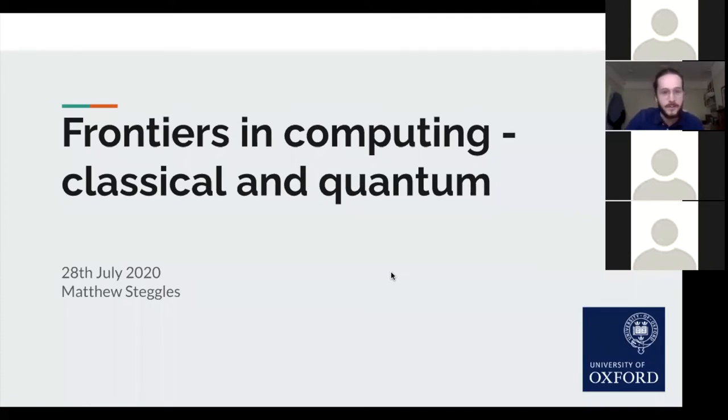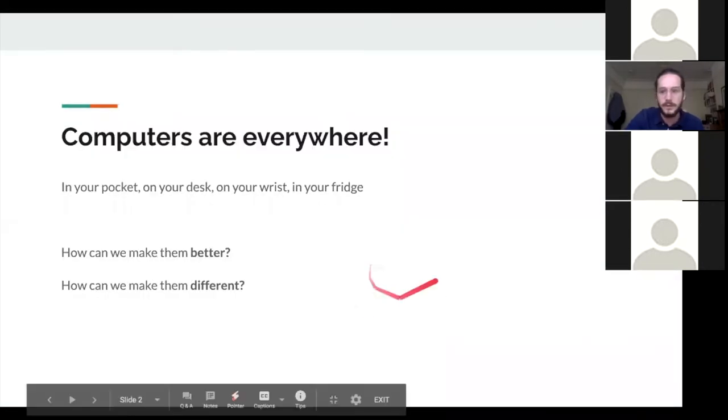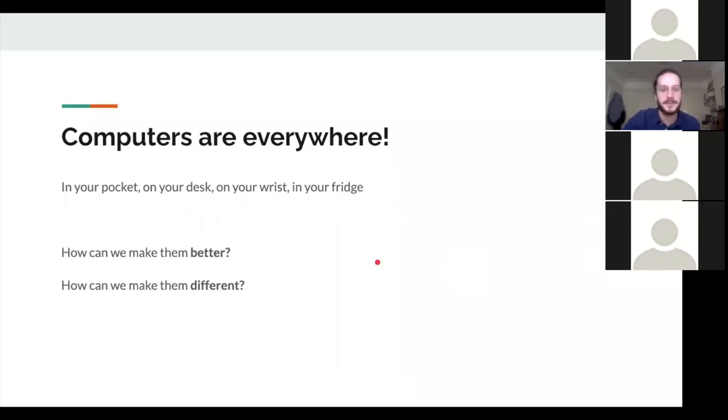I won't have failed to notice that computers are absolutely everywhere in our lives. You are almost certainly on one right now, unless you're watching me through my window. Pocket on your desk, on your wrist, maybe even in your fridge, if you have one of those horrible Samsung smart fridges, it shouldn't exist. The two obvious questions that no doubt you're interested in are, how can we make them better? And perhaps how can we change things up completely?